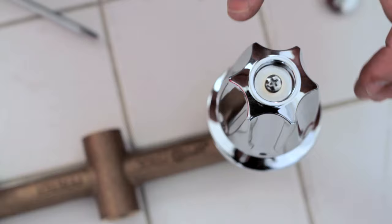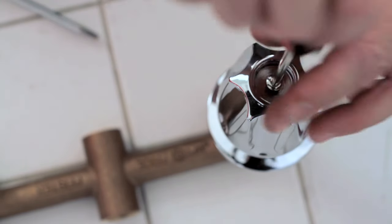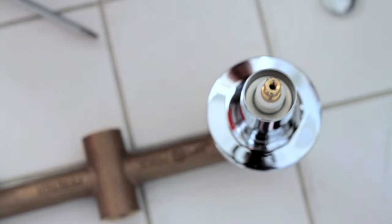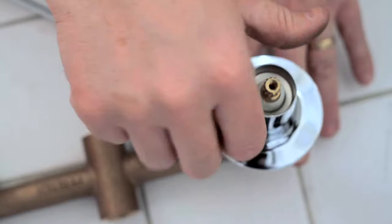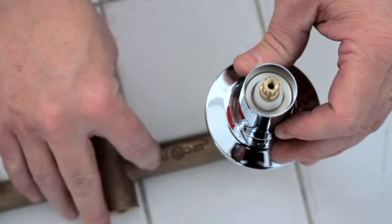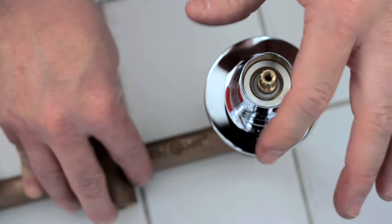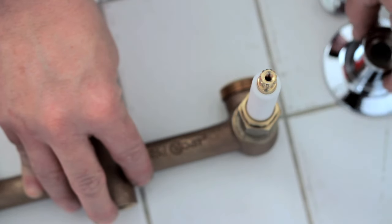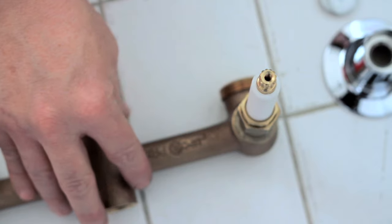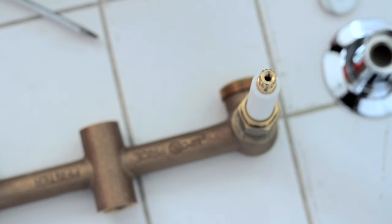If your shower faucet is leaking, what you're going to want to do is finish removing that handle. Then there's going to be what we call an escutcheon or the chrome sleeve which hides the hole in the wall. And then you'll be looking at the stem or the cartridge of this faucet.